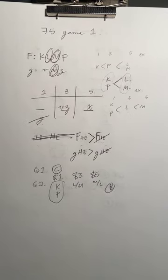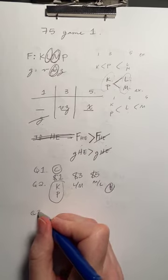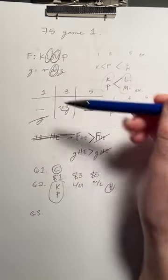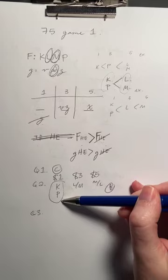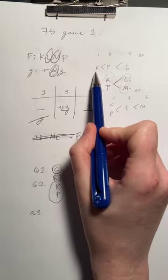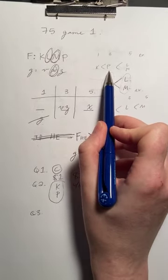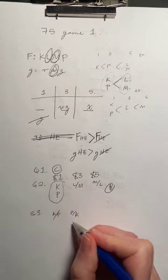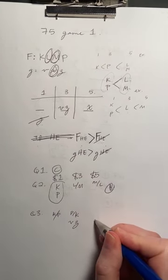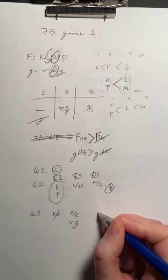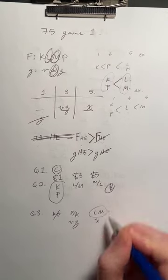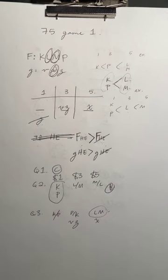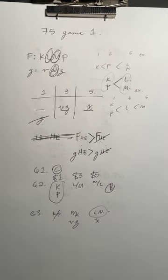Question three: if only one employee receives a $1,000 bonus, then K and P can't both get $1,000 — one gets $1,000 and the other gets $3,000. V and Z remain at $3,000 and X at $5,000. That means L and M both get $5,000, which is the key deduction. A is the correct answer.